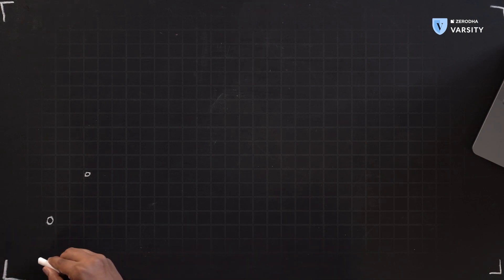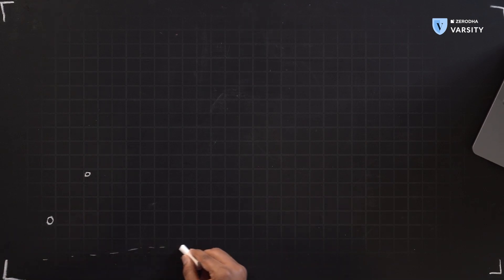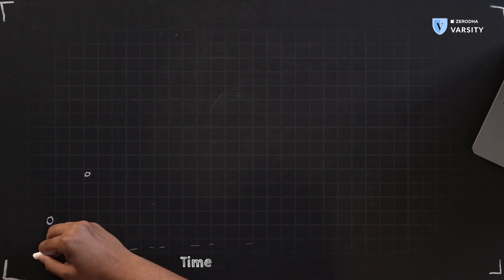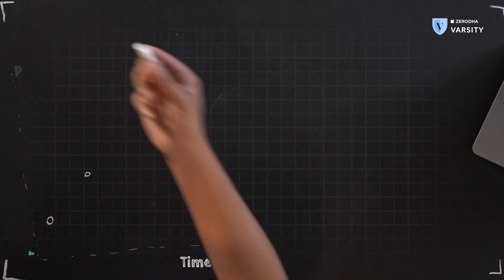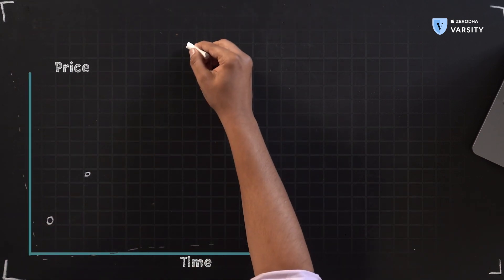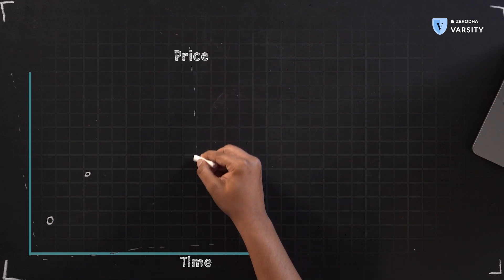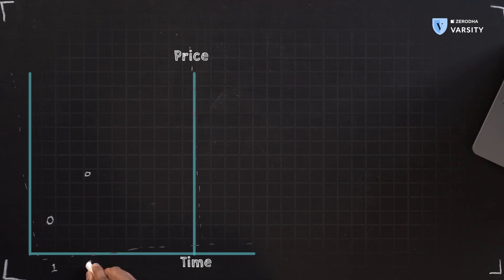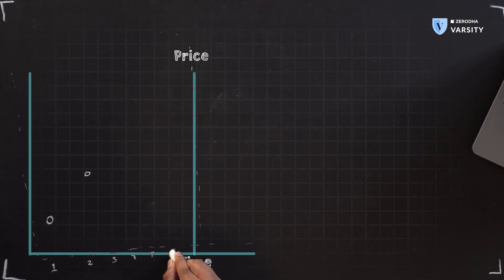This is the x-axis, and it represents time. You have the y-axis, which represents price — I'll put price on the right side. Let's suppose these are days 1st, 2nd, 3rd, 4th, 5th, and 6th. The markets aren't open every single day, but let's assume that each day here is when the markets are open and we're tracking the closing price of Tata Motors.